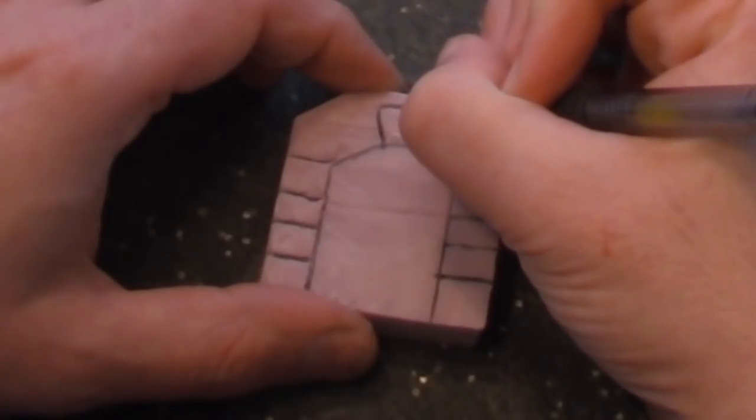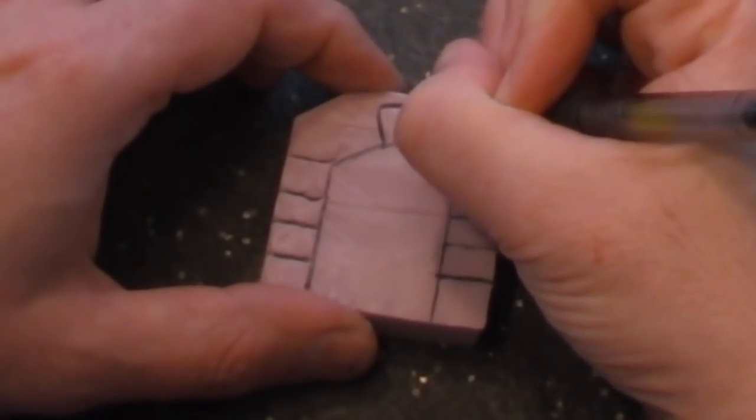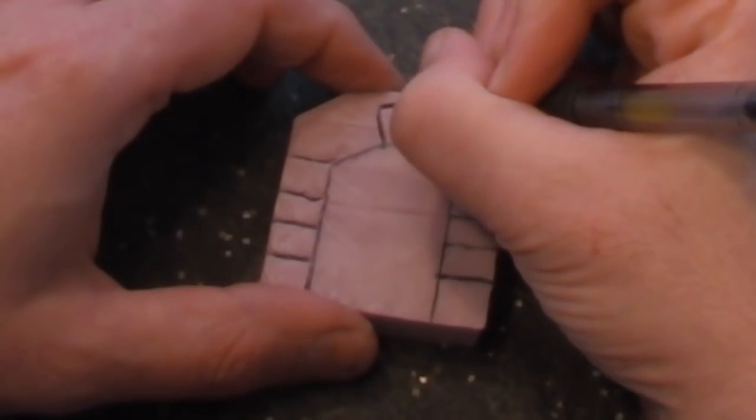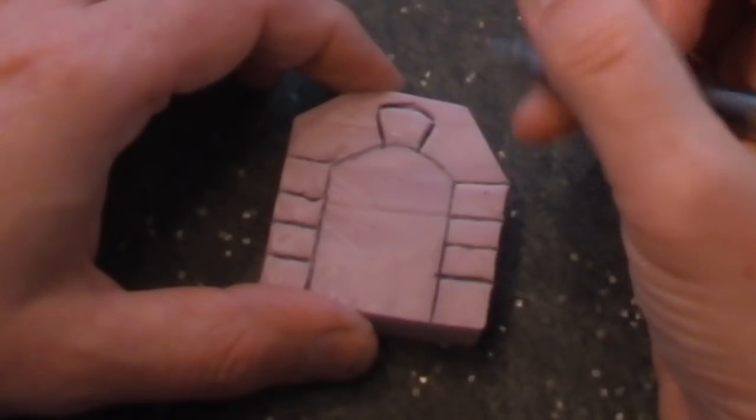Then I draw the keystone in the top center of the arch. Keystones have a triangular shape. That's so they can support the rest of the stones beneath them.